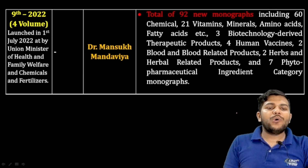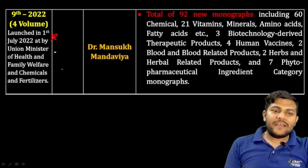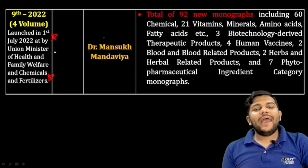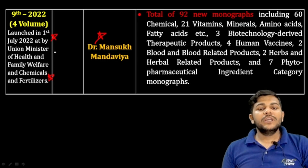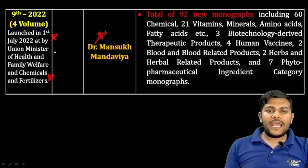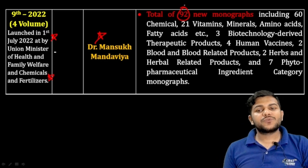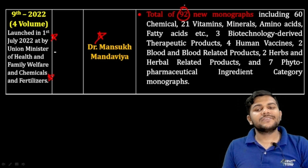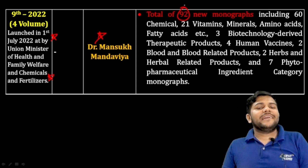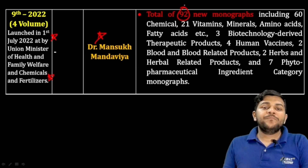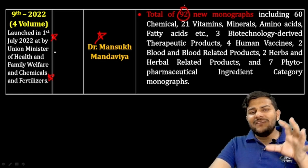The ninth and latest pharmacopoeia was published in 2022, having four volumes. It was launched on 1st July 2022 at the Union Ministry of Health and Family Welfare. Dr. Manshuk Mandavya was the chairperson. It contains 92 new monographs including 60 chemicals — minerals, amino acids, fatty acids — and three new biotechnological dried products.